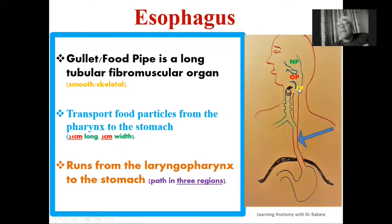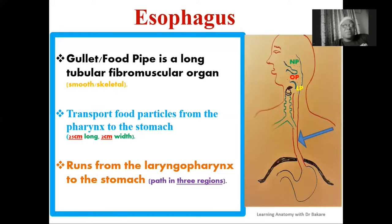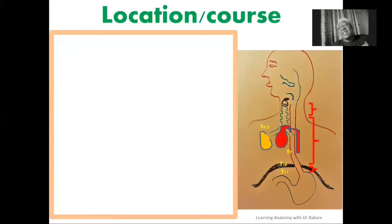Looking at the course of the oesophagus as it runs from the laryngopharynx down to the stomach, it crosses through three sub-regions: the cervical region, the thoracic region, and the abdominal region. We will be establishing the different sub-regions of the oesophagus based on the path through which they run. Let's go through the location and the course of the oesophagus.